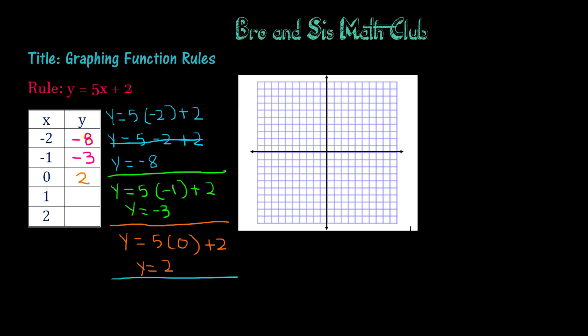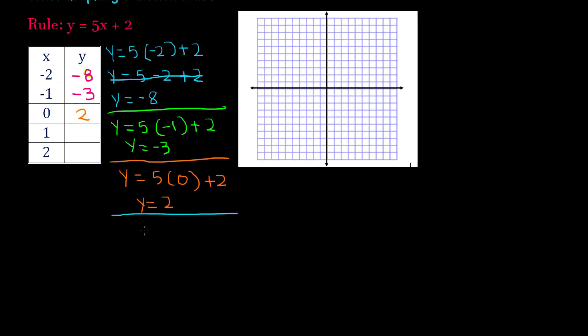Next, we have y equals 5 times 1 plus 2, which is going to give us 5 times 1, which is 5, plus 2, which is 7.